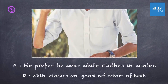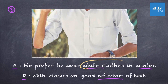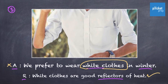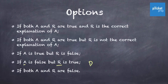Let's solve the final example. The assertion is: we prefer to wear white clothes in winter. The reason is: white clothes are good reflectors of heat. In a general perspective, people do not prefer white clothes in winter. In fact, they prefer wearing woollen or dark clothes which absorb cold and keep them warm. Now looking at the reason — white clothes are good reflectors of heat — and this is true. So the assertion is wrong and the reason is true. The option is D again.